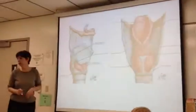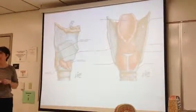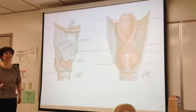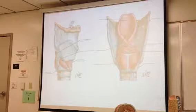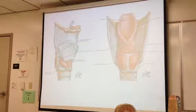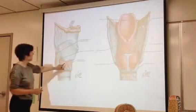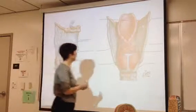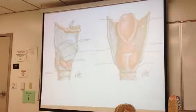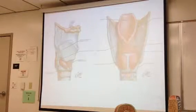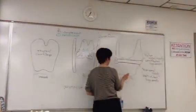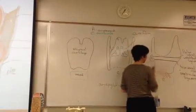The first muscle we're going to look at is called the cricothyroid. These muscles are named for the regions of cartilage that they attach to, which makes it easier to remember what they do. The cricothyroid attaches between the cricoid cartilage and the thyroid cartilage.